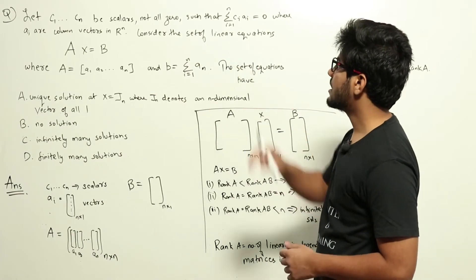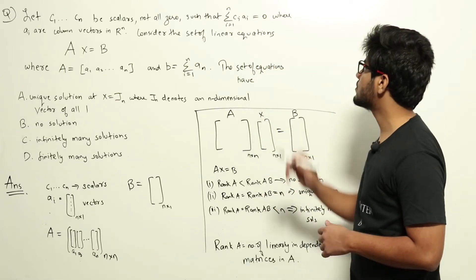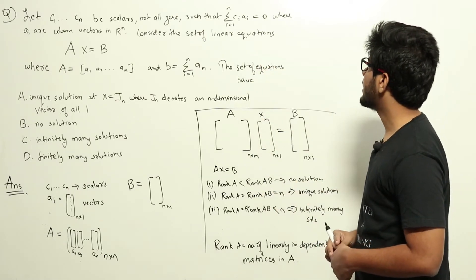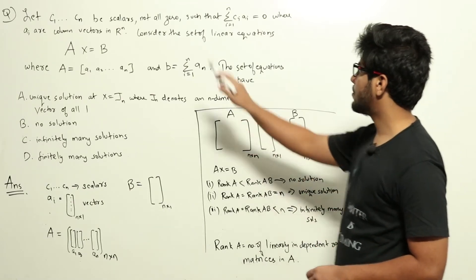Let c1 up to cn be scalars, not all zero, such that sigma i equals 1 to n, ci ai equal to 0, where ai are column vectors in R^n.